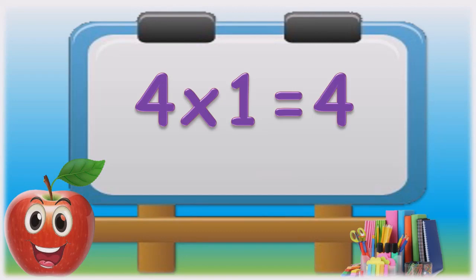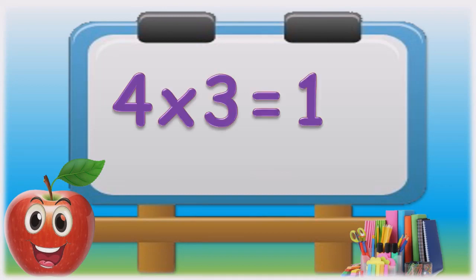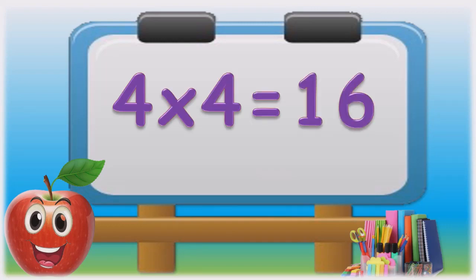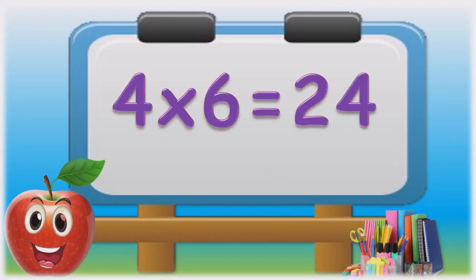Four ones are four. Four twos are eight. Four threes are twelve. Four fours are sixteen. Four fives are twenty. Four sixes are twenty-four.